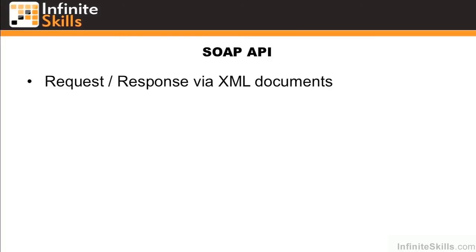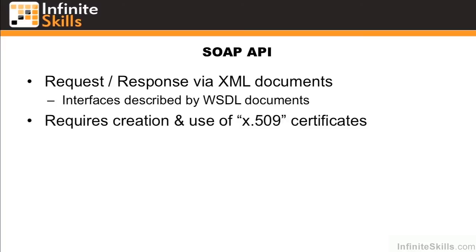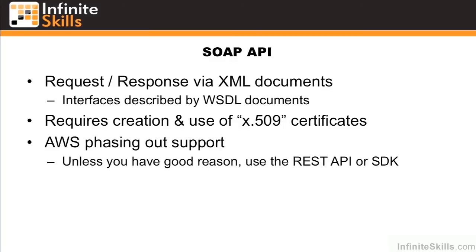The SOAP API does request-response via XML documents. The interface to deal with the SOAP API is described by a WSDL document, and it also requires creation and use of X.509 certificates to sign the requests. AWS is phasing out support of this, so unless you have a very good reason, try to use the REST API or SDK for programmatic interface.